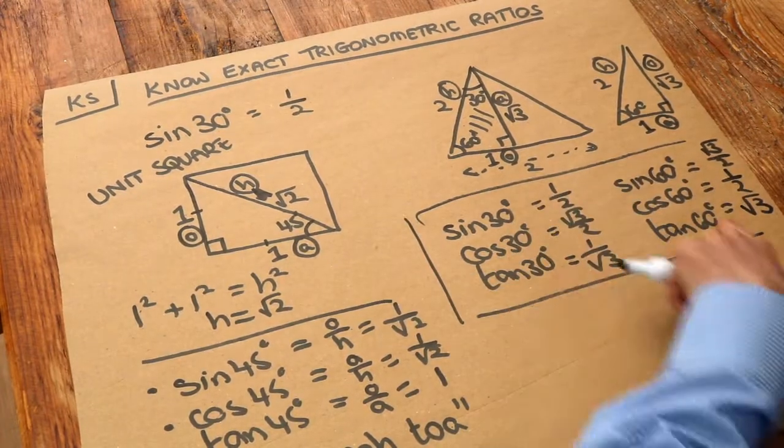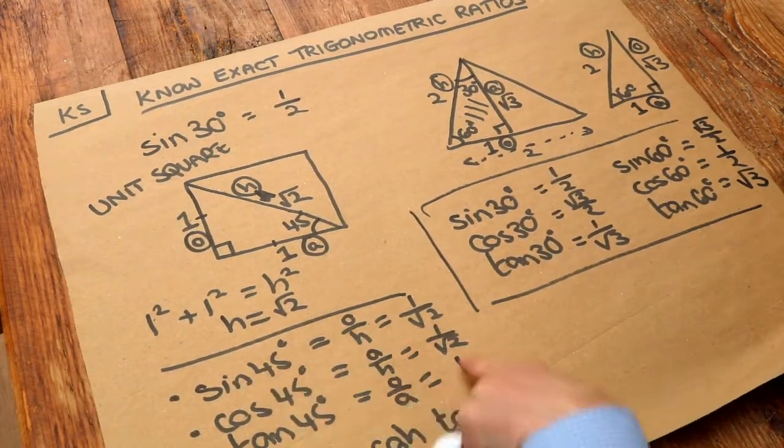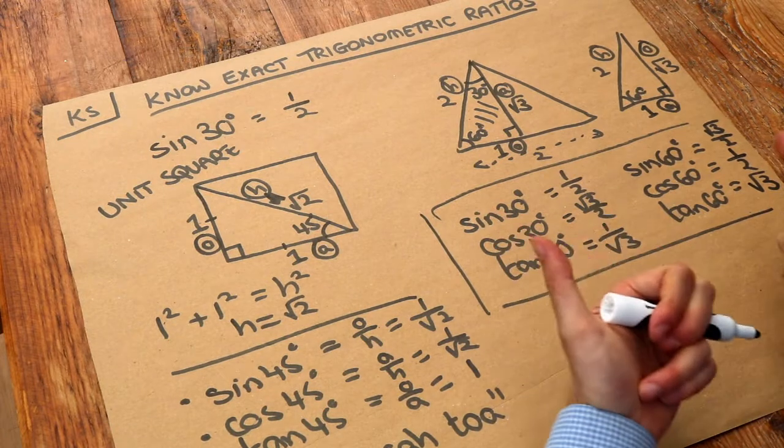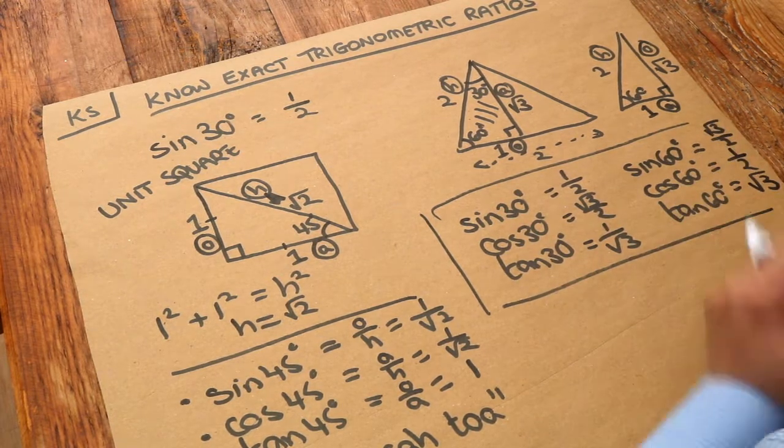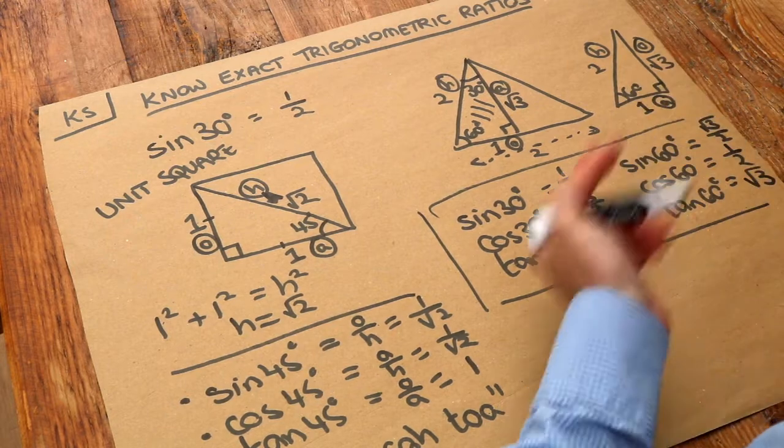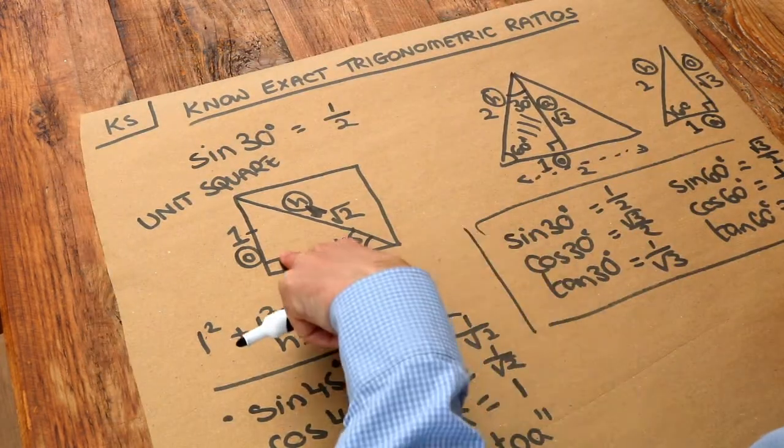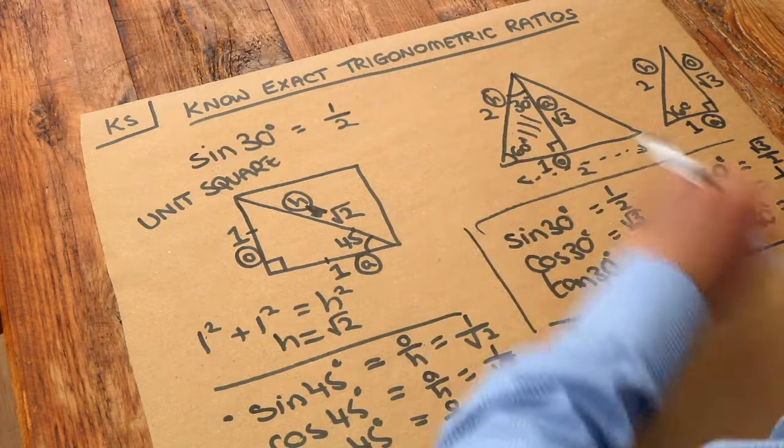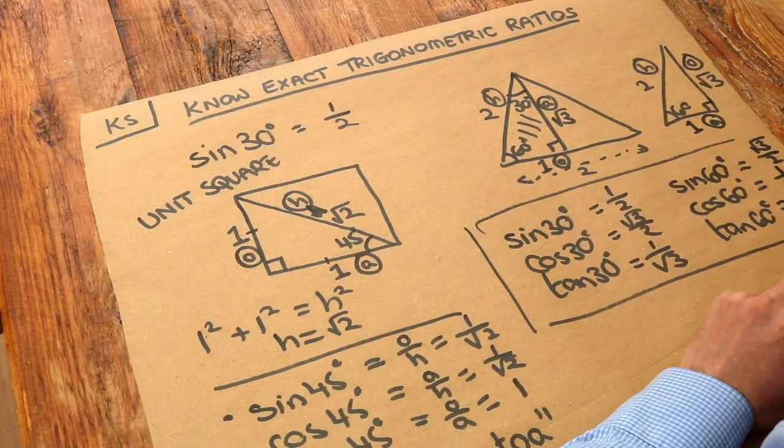These are all the key trigonometric ratios we need to know. So you need to know it for 30 degrees, 60 degrees and 45 degrees. And I encourage you to memorize those if you can. But if you do forget, then you can just draw out either a unit square or half of an equilateral triangle of length 2.